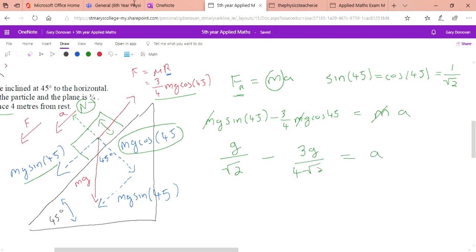This would become g over root 2 minus 3g over 4 root 2 equals a. To add these fractions we need to make the denominator the same, so I'm going to multiply above and below this fraction by 4. That gives us 4g over 4 root 2 minus 3g over 4 root 2 which is 1g over 4 root 2, and that's equal to a. Now we have our value of acceleration.